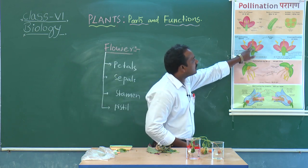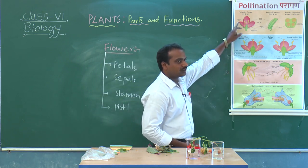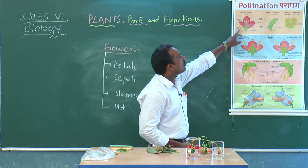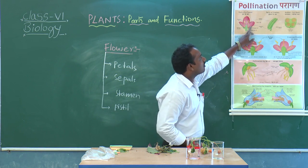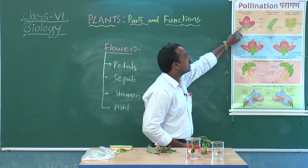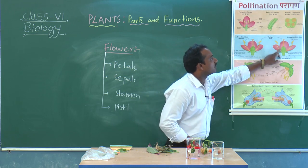Petals are the brightly colored parts of the plant, which helps in pollination.